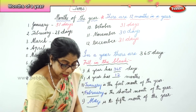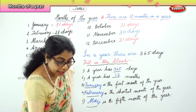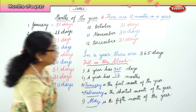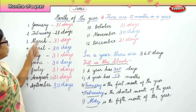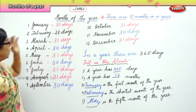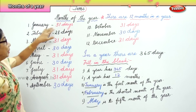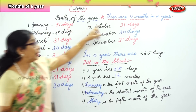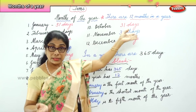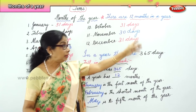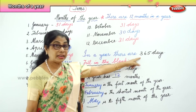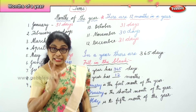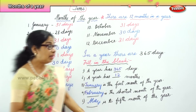Today we learnt the names of the months, the spellings of the months. Every month has a different number of days. There are twelve months in a year and there are three hundred and sixty-five days in one year.